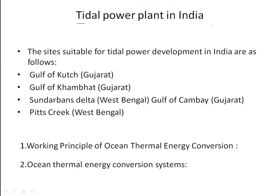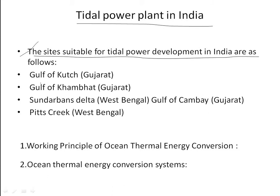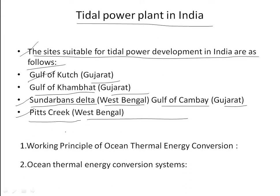Tidal power plants in India: sites suitable for tidal power development in India include the Gulf of Kachchh (Gujarat), Gulf of Khambhat (Gujarat), Sundarbans Delta (West Bengal), and Pits Creek (West Bengal).